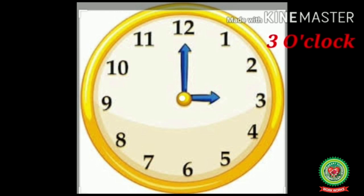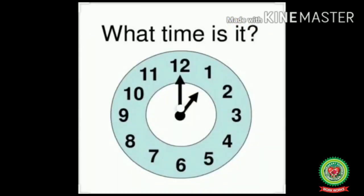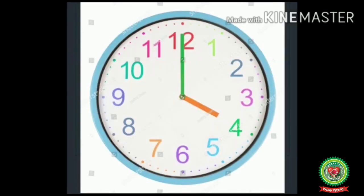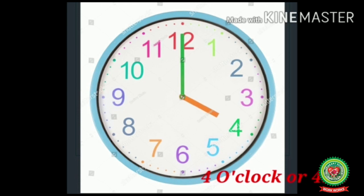Now let's have some other examples for a better understanding of o'clock time. What time is it? The long hand is at 12 and the short hand is at 1, so the time is 1 o'clock or 1:00. Now tell me the time on this clock. The long hand is at 12 and the short hand is at 4, so the time is 4 o'clock or 4:00.